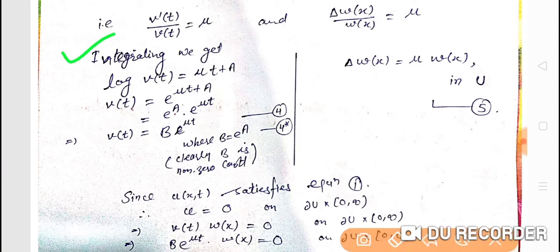If we take v'(t)/v(t) equals mu and integrate with respect to t, since derivative is in numerator and the function is in denominator, we get log v(t) equals mu t plus constant of integration. Taking exponential, v(t) equals e^(mu t) times e^a. We can write e^a as b, so v(t) equals b times e^(mu t), where b is a non-zero constant.